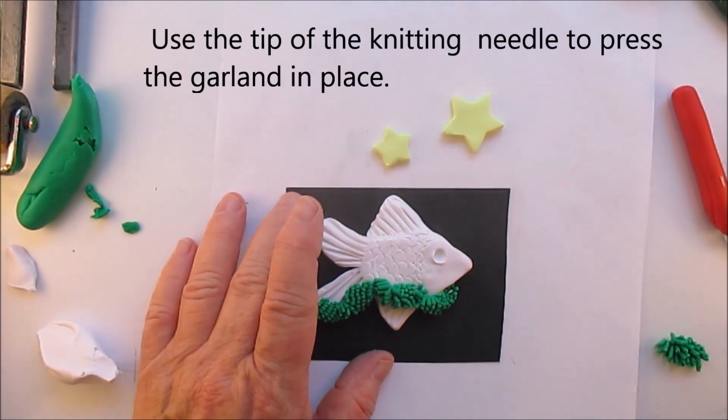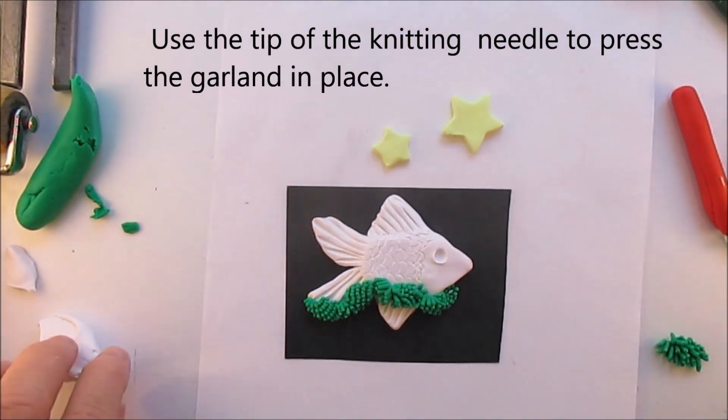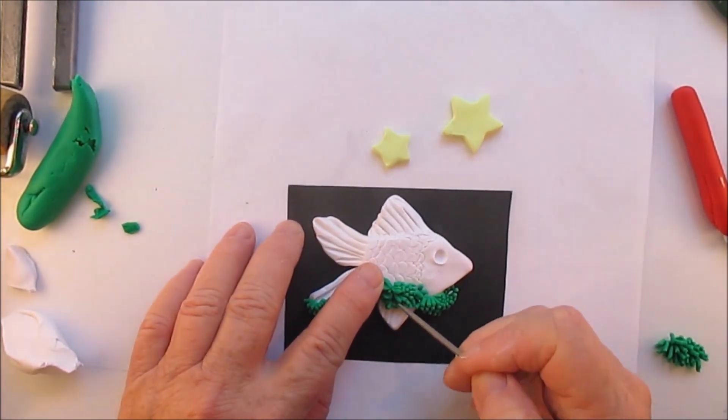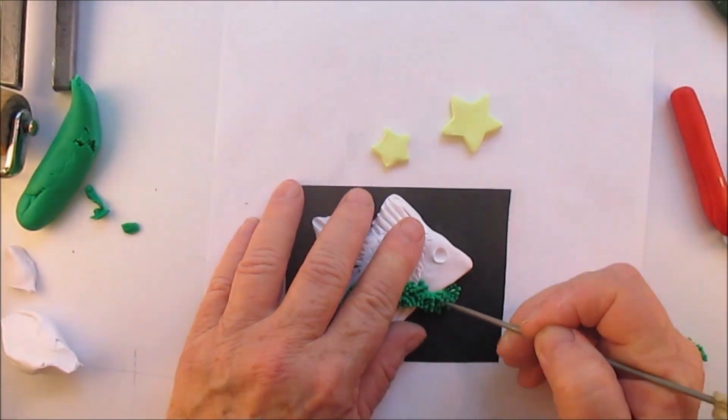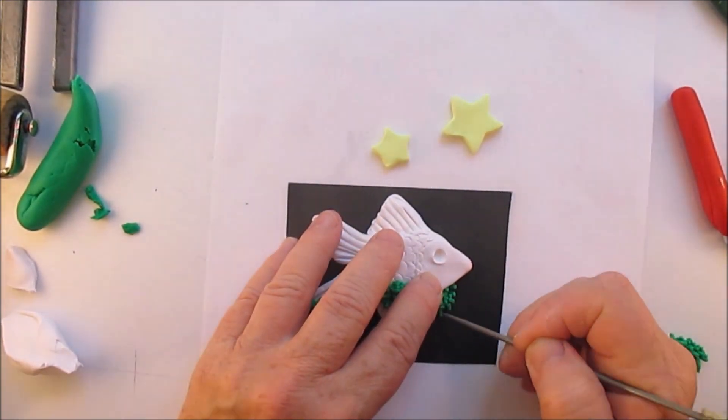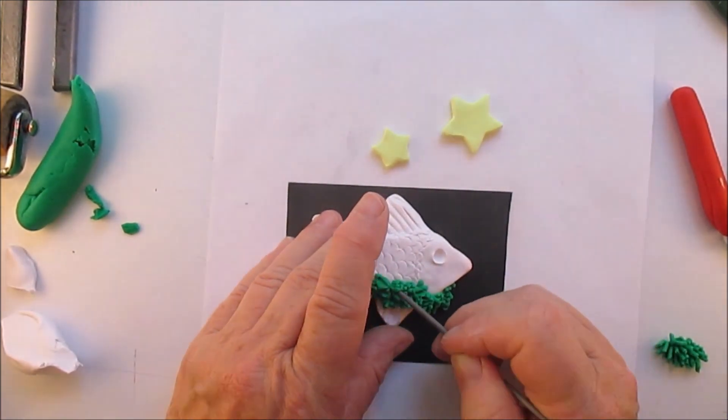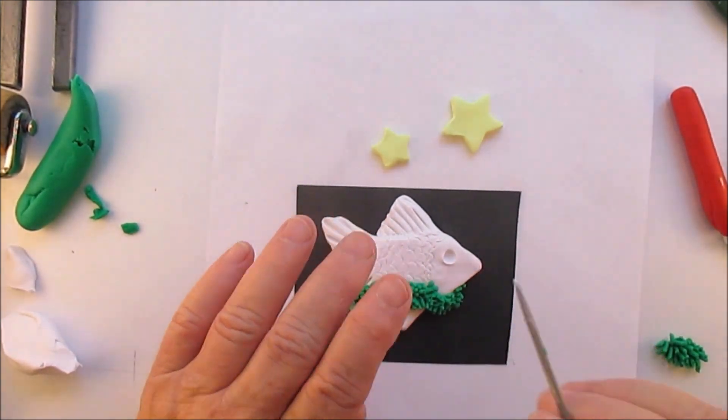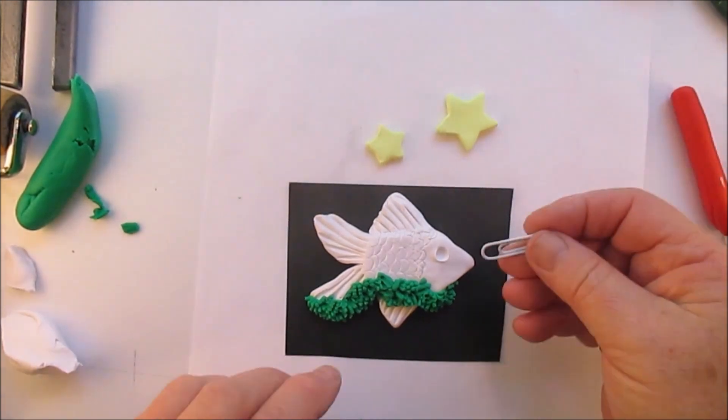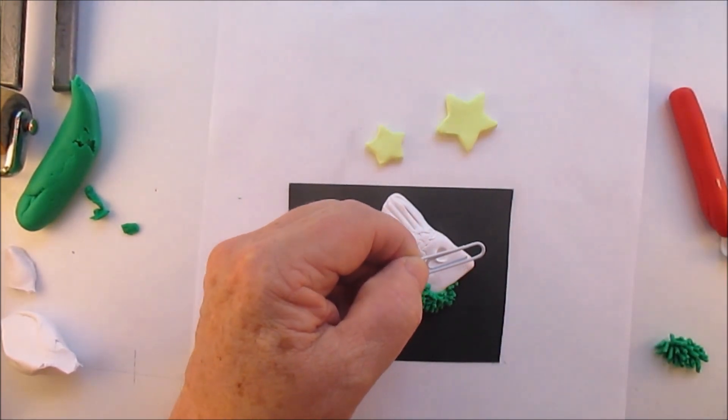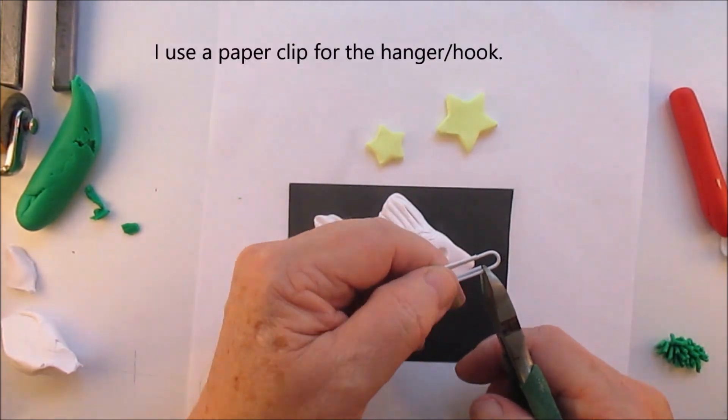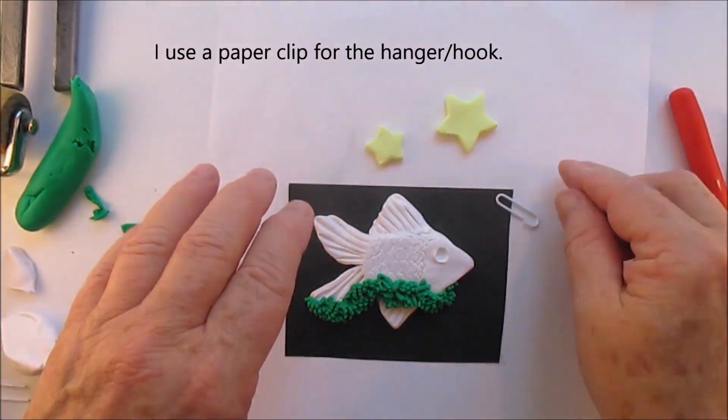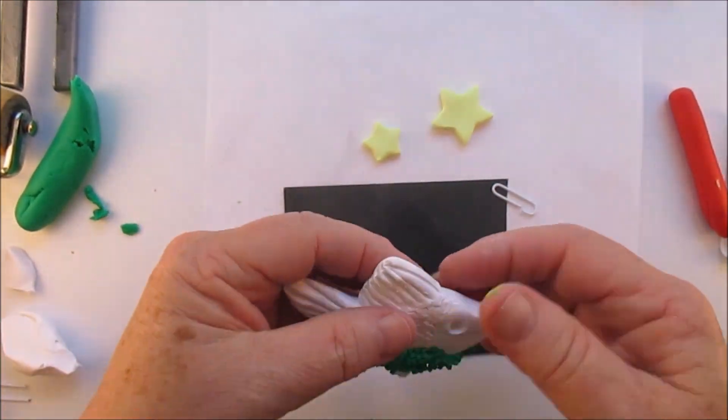And I use the tip of the knitting needle to press the garland in place because it adheres it to the fish without flattening the little strands. I think I found out one of the problems with my microphone is that I have to let it start and run for a little bit before I start talking. Because if I start talking the minute I hit record, I sound very garbled. And I'm sorry about that, but I just figured that out.